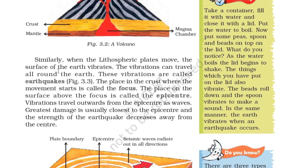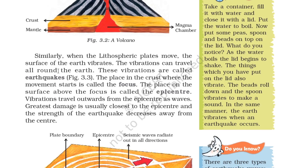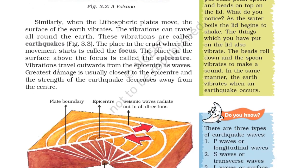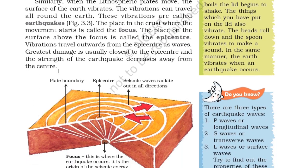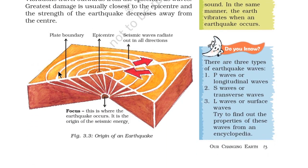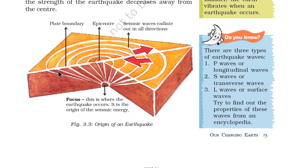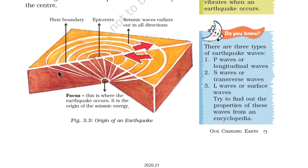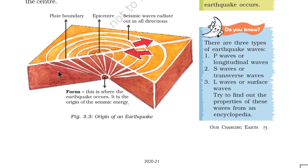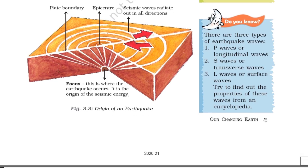In the same manner the earth vibrates when an earthquake occurs. There are three types of earthquake waves: P waves or longitudinal waves, S waves or transverse waves, and L waves or surface waves. Try to find out the properties of these waves from an encyclopedia.